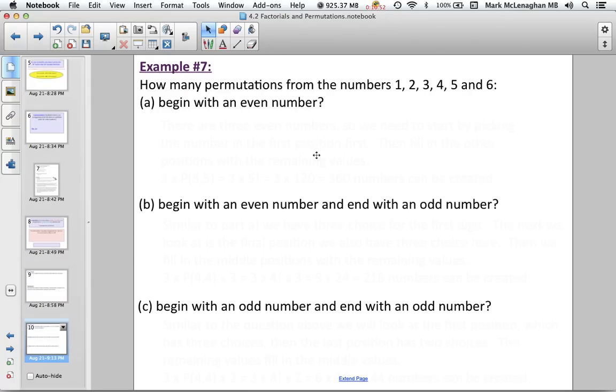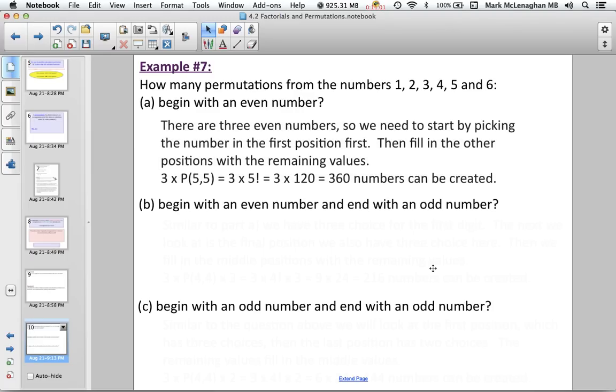Okay, how many permutations from the numbers 1, 2, 3, 4, 5, 6, if the first number has to be even. Okay, so three numbers are even, 2, 4, and 6. So we can start by picking one of those first, so we'll fill in the first position. So we have three choices there. And then the other five remaining numbers are just P5 become 5. So it's 3 times 5 factorial, or 3 times 120, which is 360 different numbers can be arranged with an even number at the beginning.